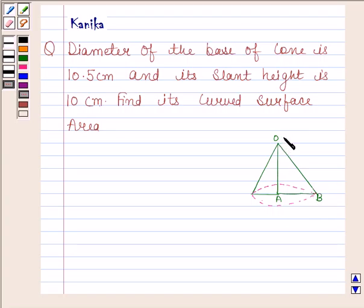O is called the vertex of the cone and you can see that base of this cone is circular. Radius of this cone is AB. Length OA is called the height of the cone and this, that is OB, is known as slant height of the cone. We usually denote height by H, slant height by L and radius by R.